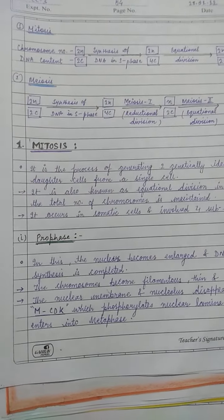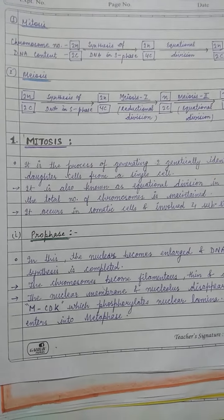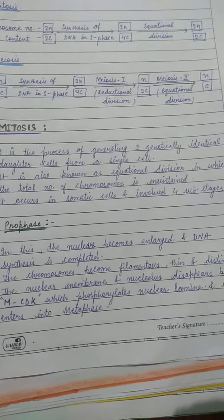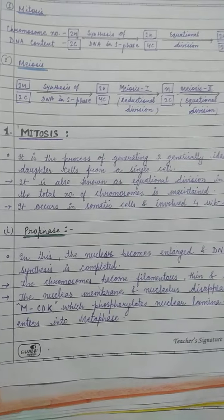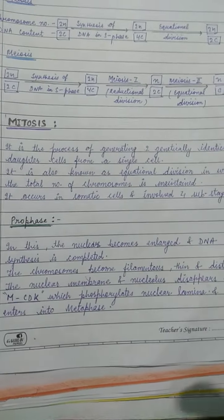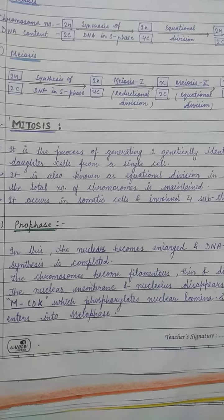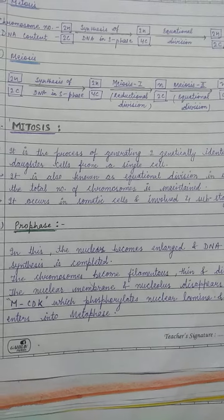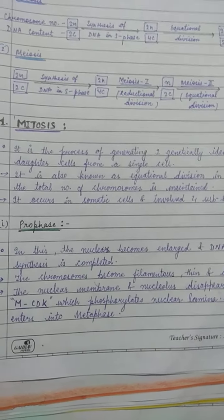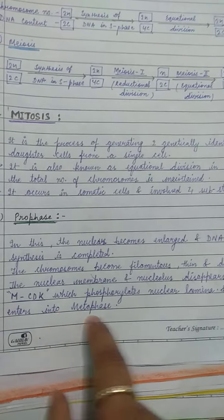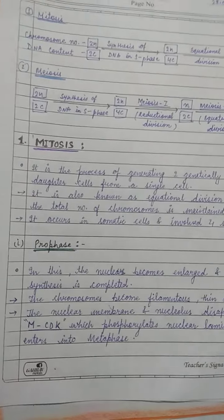The first stage of mitosis is prophase, in which the nucleus is enlarged as DNA synthesis is complete, chromosomes become filamentous, thin, and distinct. The nuclear membrane and nucleolus disappear during late prophase.